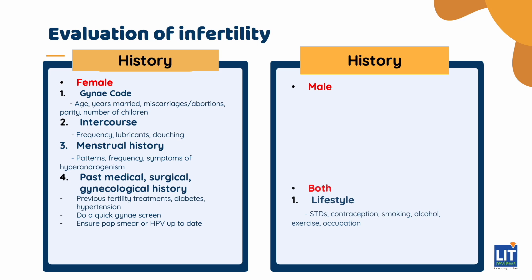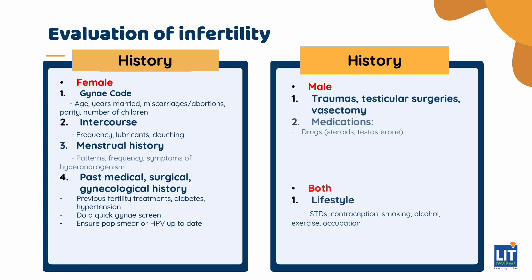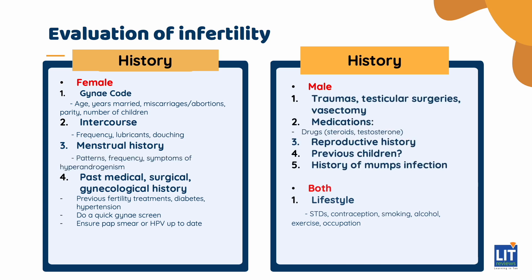Ask about previous fertility treatment and its result. To determine safety for pregnancy, ask for any diagnosis or symptoms of diabetes and hypertension, and aim to keep them under control before pregnancy. Do a quick gynae screen and ensure their pap smear or HPV tests are up to date. For the male, ask about any traumas, testicular surgeries, vasectomies, and medications or drugs such as steroids and testosterone. Also ask whether patients have fathered children before — noting that studies say 2-4% of patients have mistaken paternities. Ask if they have a history of mumps infection.